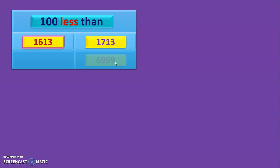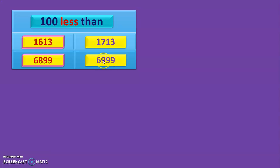Next question is 6,999. The digit in the 100s place — 1s, 10s, 100s — we have a 9 in the 100s place. There will be no change in the 1s and 10s place. 9 minus 1 gives you 8. So the answer is 6,899. We looked at the 100s place and subtracted 1 from that digit because it is 100 less than.